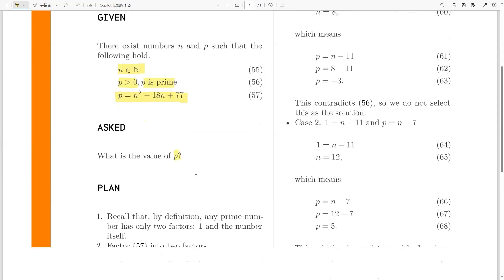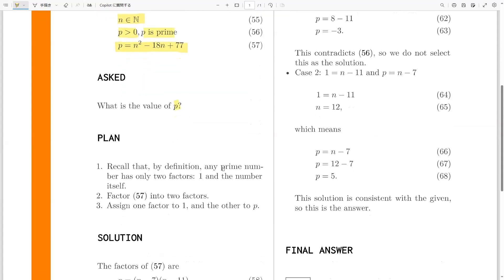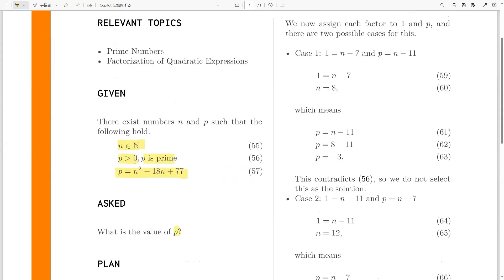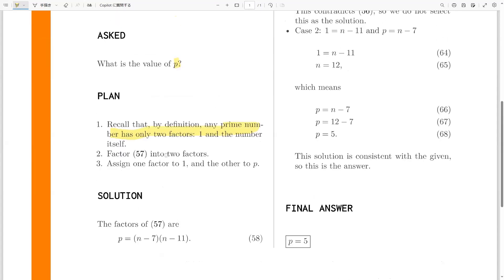To do this, again, we recall that a prime number is any positive integer or sometimes there are negative prime numbers. So we can also consider that depending on the situation. In this case, we are specifically told that p is a positive number and that it is prime, and we recall that a prime number has only two factors. That's 1 and the number itself, in this case, p.